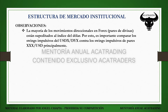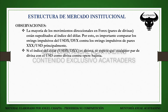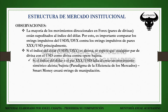Esos pares son, por ejemplo, euro dólar, libra dólar, australiano dólar o neozelandés dólar — popularmente conocidos como cable, Aussie y kiwi. Si el índice del dólar, el USDX o el DXY, es alcista, se espera que cualquier par de divisa con el dólar como divisa contra opere bajista. Deberíamos ver una correlación negativa.